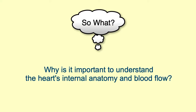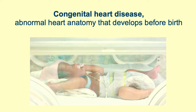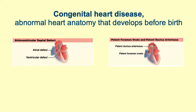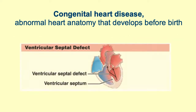Why is it important to understand the heart's internal anatomy and blood flow? Well, this information helps us understand congenital heart disease — when a baby is born with abnormal heart anatomy. There are many congenital heart defects, such as abnormal holes in the heart, malformed valves, or inappropriate connections between the arteries and the heart. One of the most common is a ventricular septal defect, an abnormal opening in the interventricular septum.